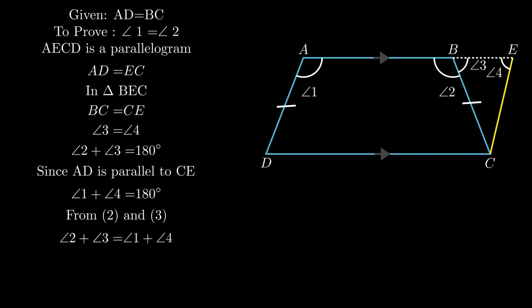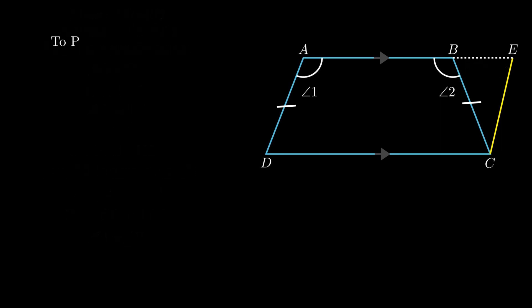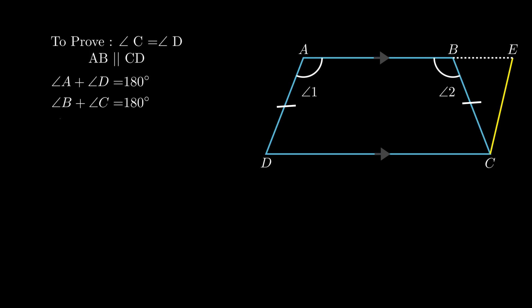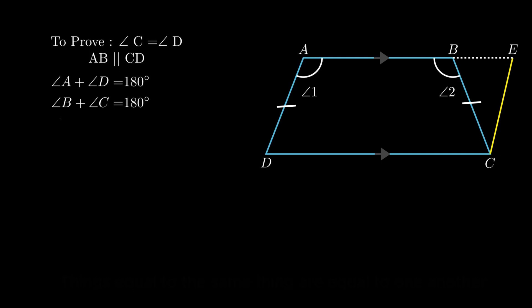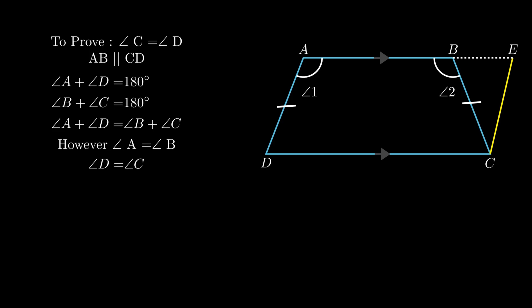Since angle 3 = angle 4, by cancellation we get angle 2 = angle 1. Hence angle A = angle B. For the second part, since AB is parallel to CD and co-interior angles are supplementary: angle A + angle D = 180° and angle B + angle C = 180°. Since angle A = angle B, by cancellation angle D = angle C.